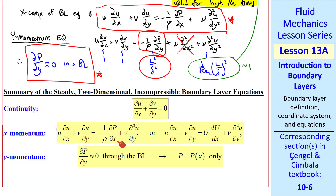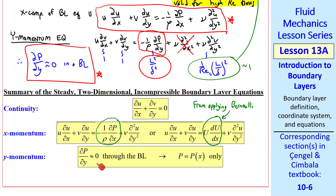Here's a summary of our boundary layer equations: continuity, x-momentum, and y-momentum. I write here an alternate form of the x-momentum equation, which can be easily shown by differentiating the Bernoulli equation. Since del p del y is zero through the boundary layer, p is not a function of y. It's not a function of time or z since this flow is steady and two-dimensional. So p has to be a function of x only — this is a significant finding in the boundary layer approximation.